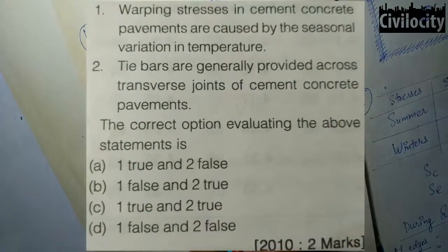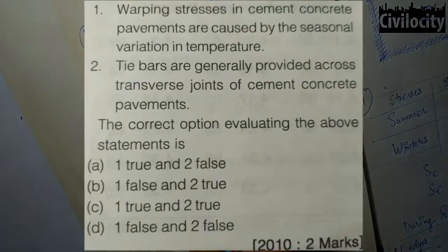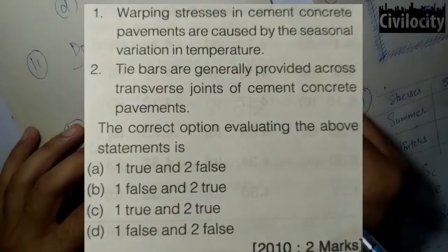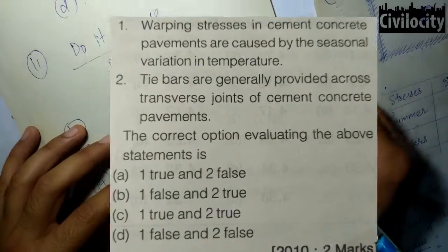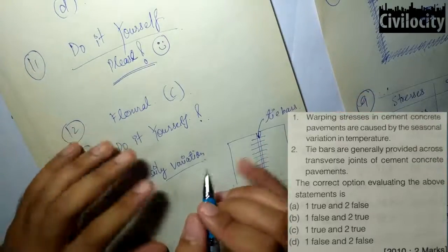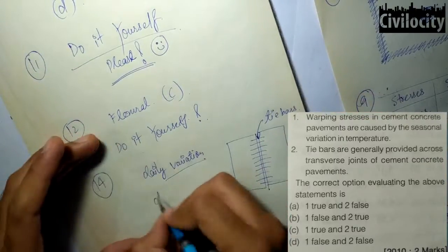Consider the following statements about cement concrete pavements. First: warping stresses in cement concrete pavements are caused by seasonal variation in temperature — this is incorrect; warping stresses are caused by the daily variation in temperature. Second: tie bars are generally provided across transverse joints — this is also incorrect; tie bars are provided in the longitudinal joints. Both statements are false — that is option D.